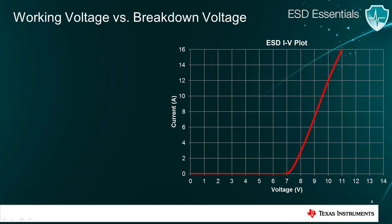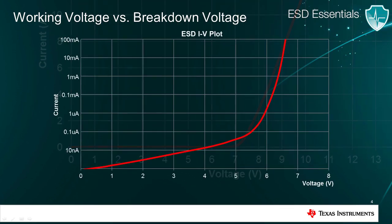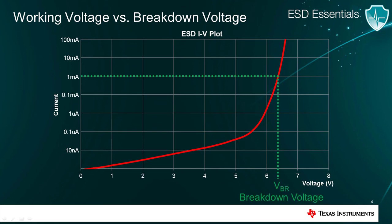Let's take a closer look at this current voltage curve on a logarithmic plot. As the input voltage approaches the diode's breakdown voltage, defined by the one milliamp current level in the plot, the diode will begin to conduct a significant level of current. This current will continue to increase with voltage. Ideally, the diode current should be zero for any voltage less than the breakdown voltage. However, in the real world, there will always be some leakage current, as you can see from the plot.